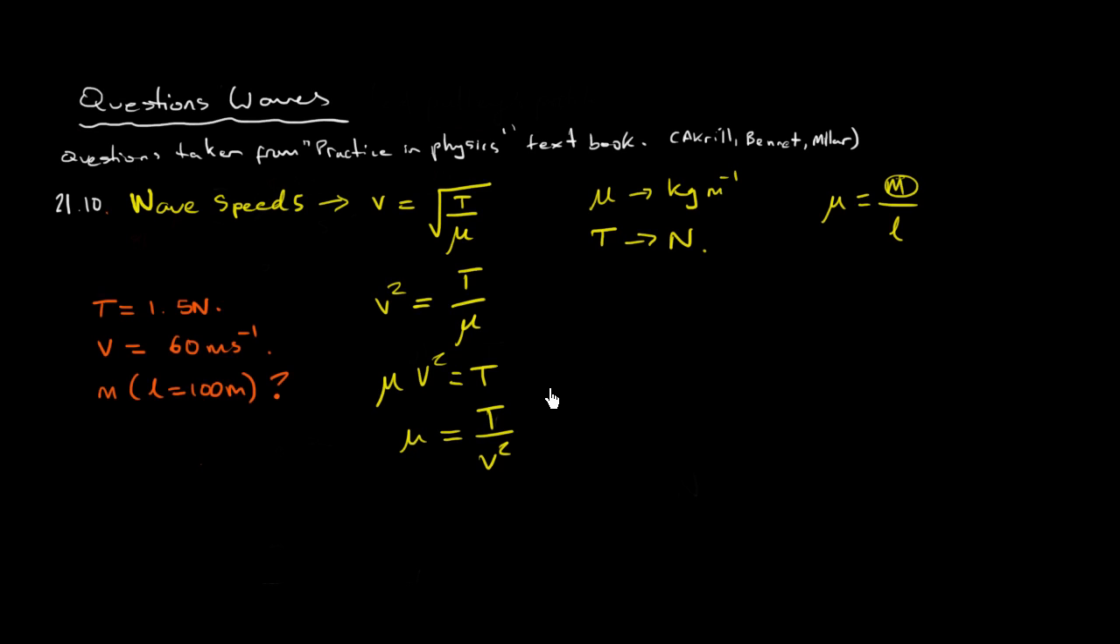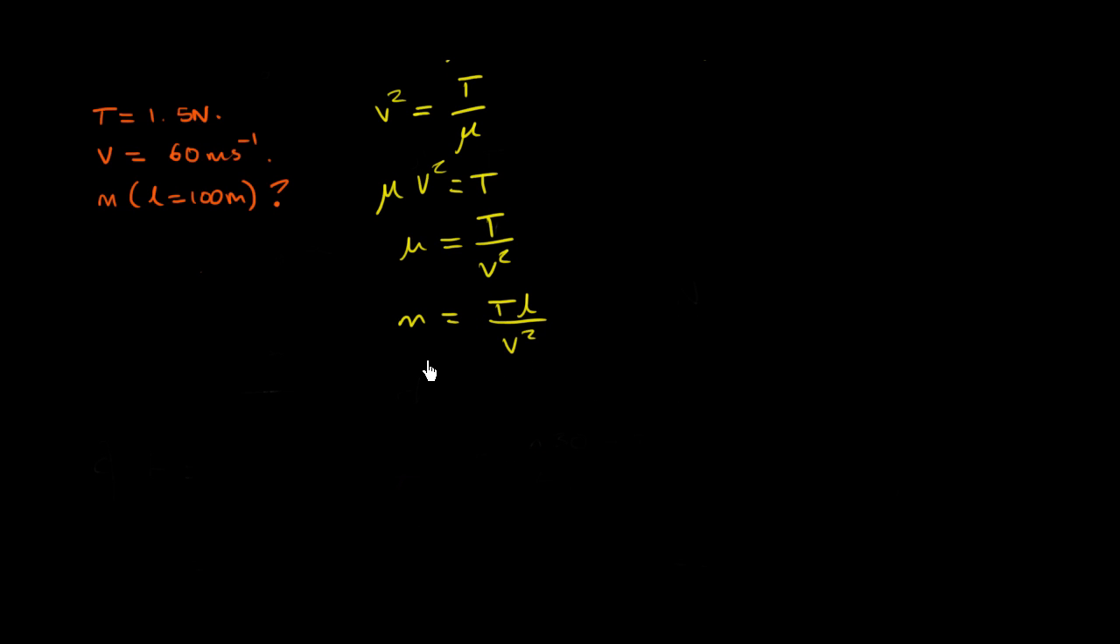And we still have to finish because the question actually asks us for m, not for μ. So, μ is the same thing as m over L. So, therefore, the mass will be this times L. If we multiply both sides of the equation by L.